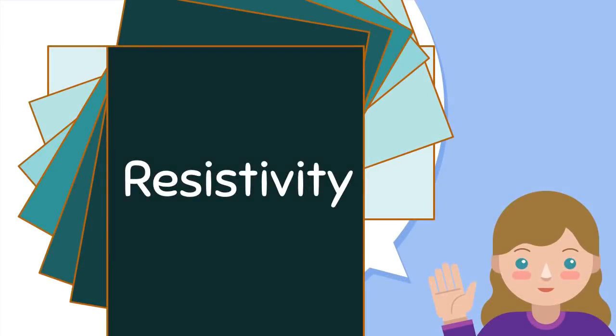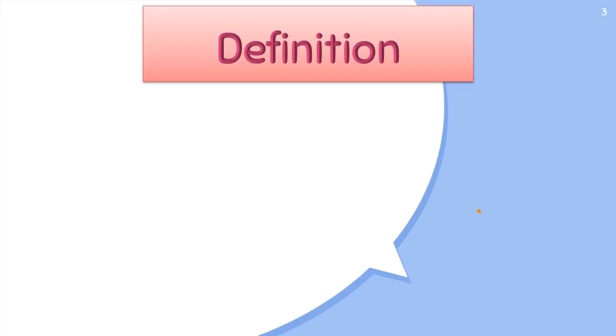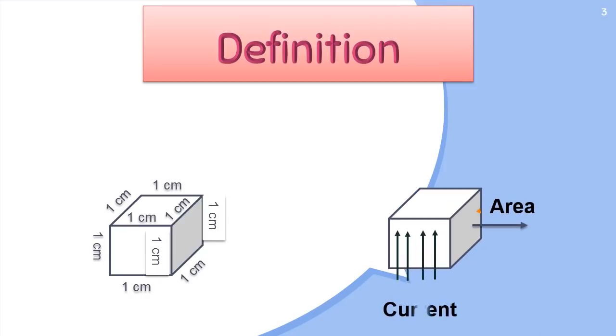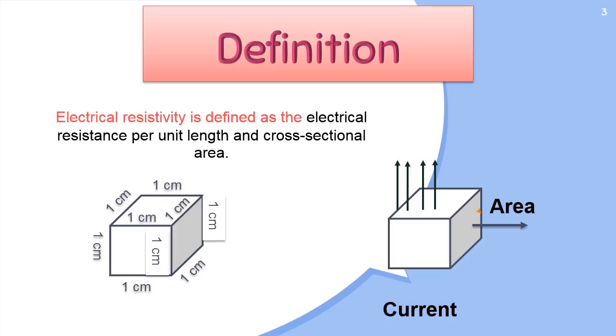Welcome back to SK Electronic Prep. Today we will learn all about resistivity. The resistivity of a substance is defined as the resistance of a cube of that substance with unit length edges, with the assumption that current flows normal to opposite faces and is dispersed uniformly across them. At a given temperature, electrical resistivity is defined as the electrical resistance per unit length and cross-sectional area.